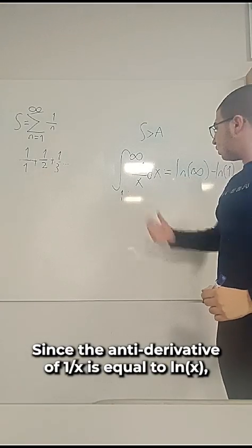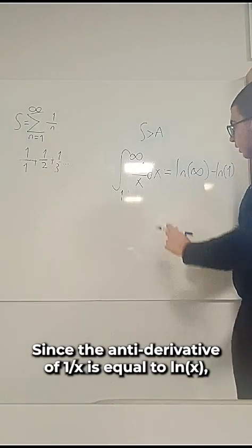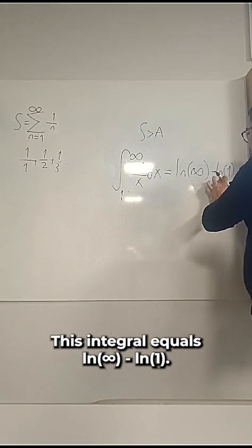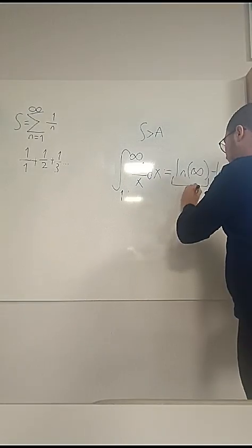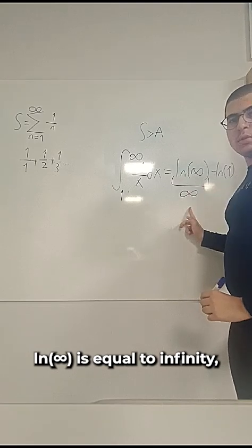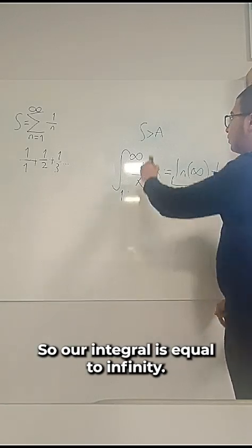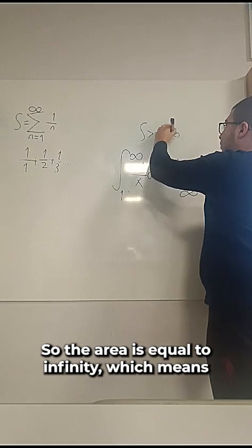Since the antiderivative of 1 over x is equal to ln x, this integral equals ln of infinity minus ln of 1. ln of infinity is equal to infinity, so our integral is equal to infinity. So the area is equal to infinity.